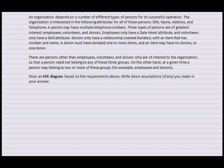Address, and telephone. A person may have multiple telephone numbers. Three types of person are of greatest interest: employees, volunteers, and donors. Employees only have a date hired attribute and volunteers only have a skill attribute. These are the specialized attributes, and donors only have a relationship.